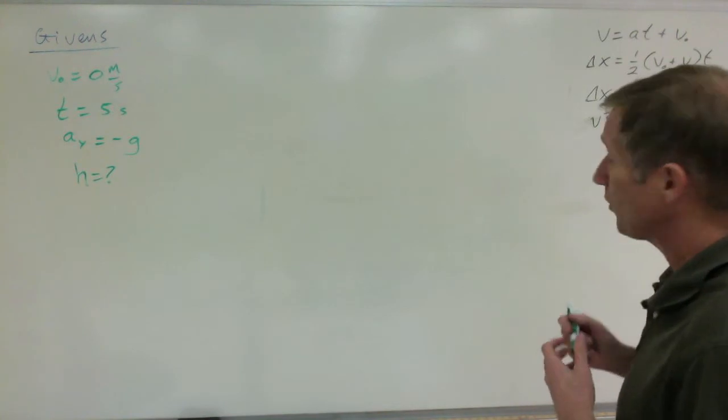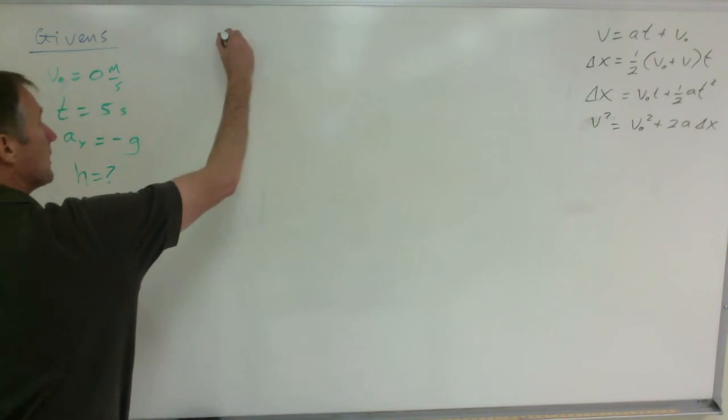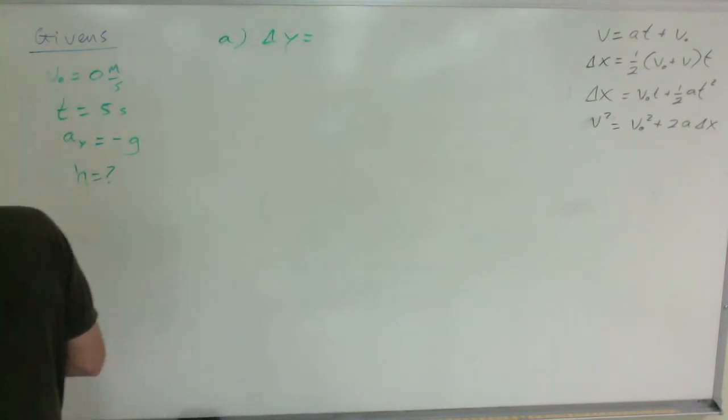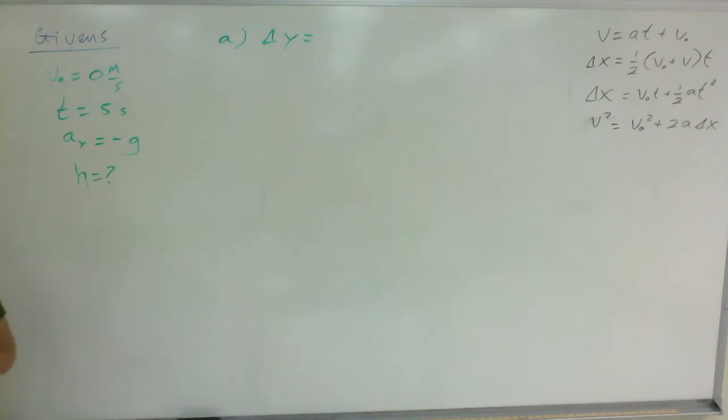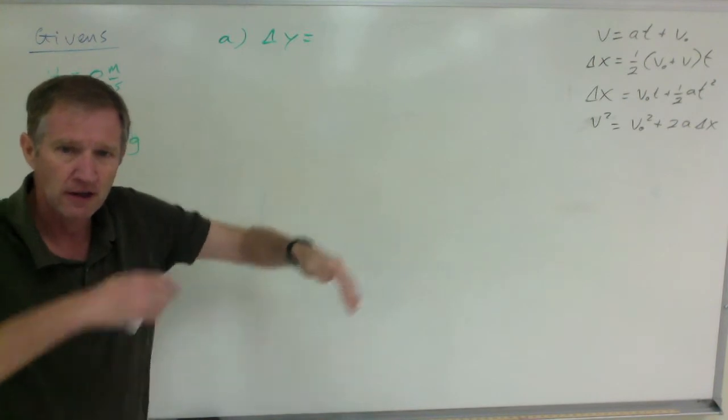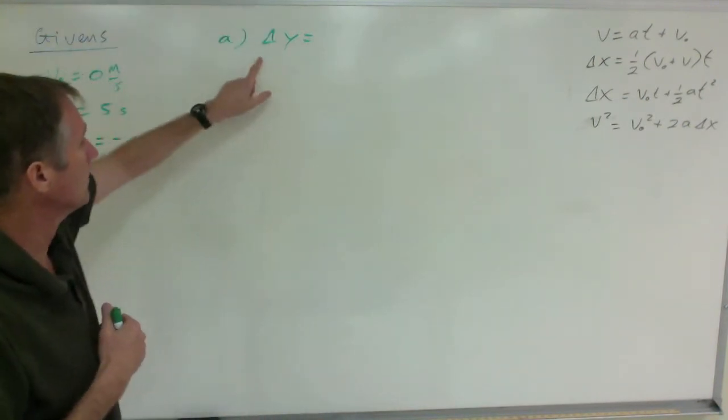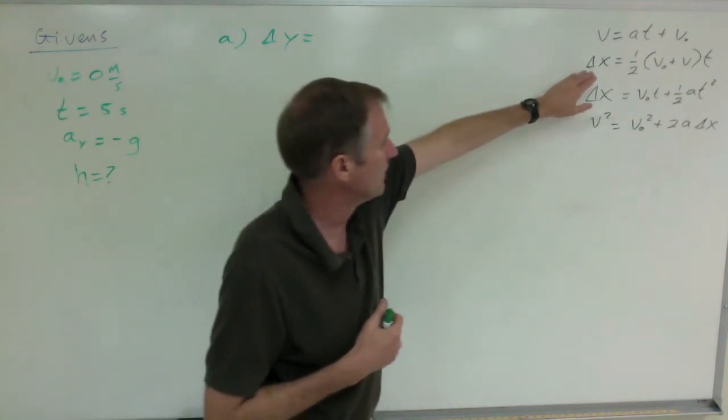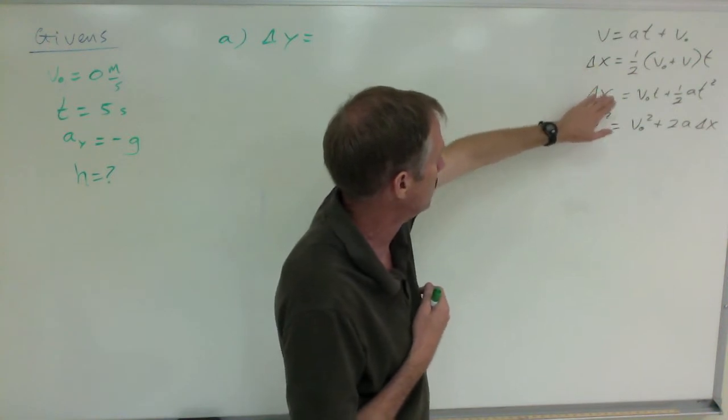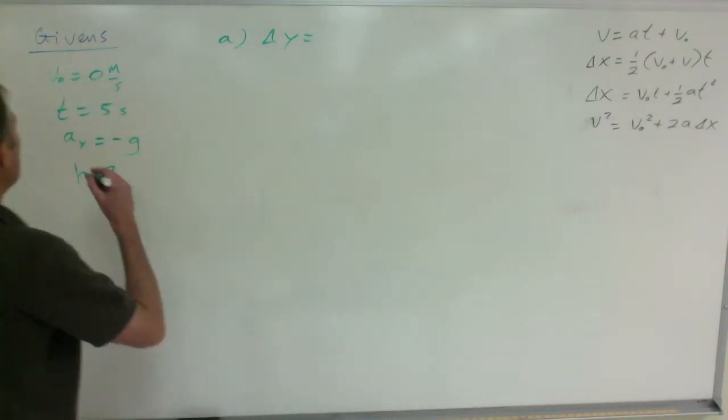The variable that we're looking for, for the object that's falling, is its displacement. For part a, we'll look for delta y. This thing is not moving horizontally, it's falling, and that's the y-axis. Wherever you see a delta x here, that's just generic for horizontal, but we're not in the horizontal axis, we're in the vertical, so put a y in there.